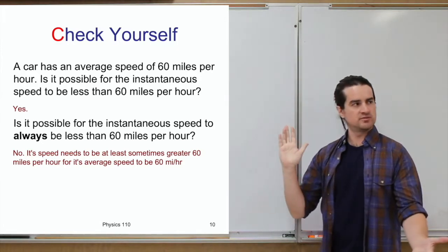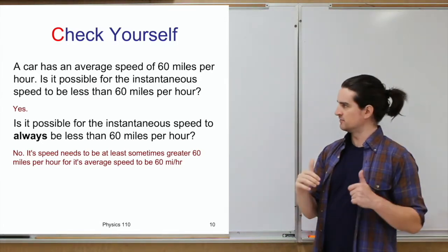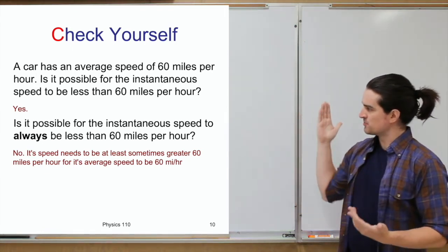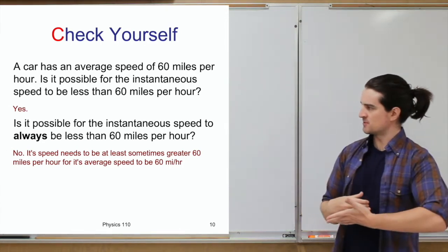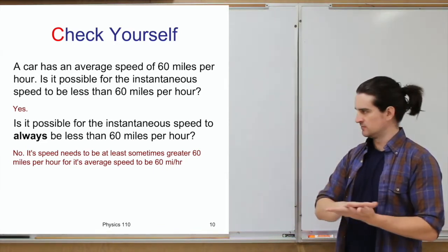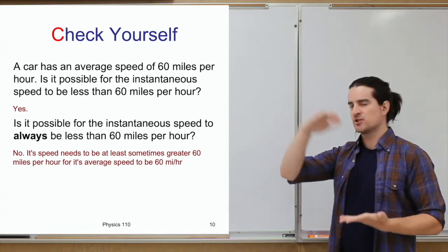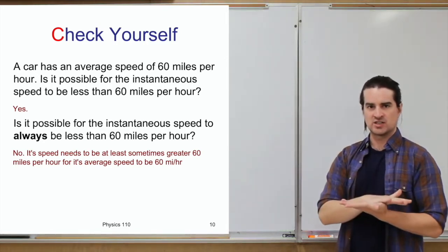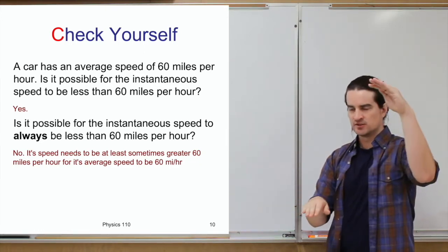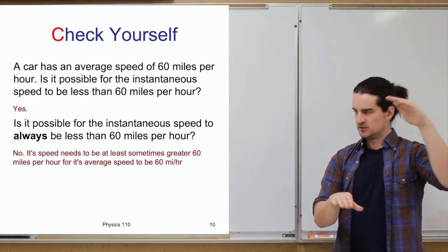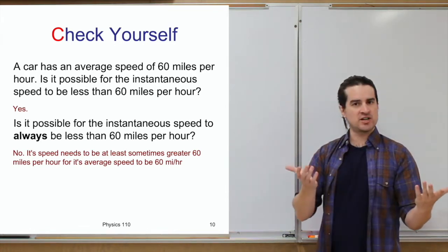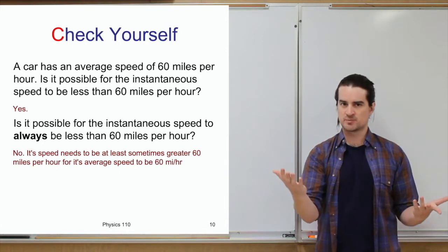Hopefully you answered yes to the first question. But can your instantaneous speed always be less than 60 miles per hour? The answer is no, because if you always have an amount less than 60 miles per hour, it can never average out to 60. If you're traveling slower at some times, then to average up to 60, you must have traveled faster than 60 at some points too.